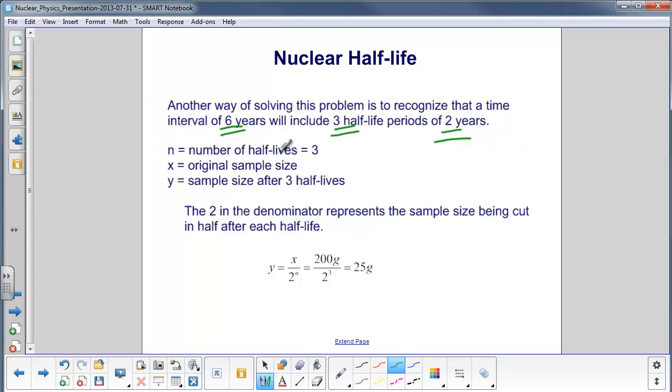n will be the number of half-lives, which in this case is three. x is your original sample size, how many grams of the material you started out with. And y will be what you have after three half-lives.